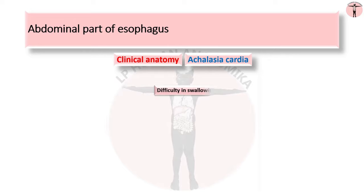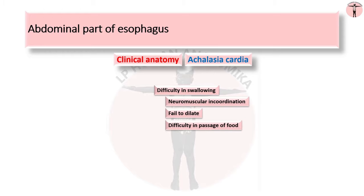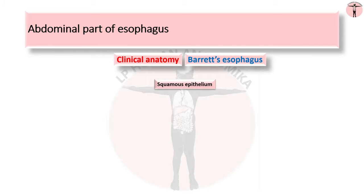Achalasia cardia is difficulty in swallowing. Usually the lower end of the esophagus is closed and dilates only during the passage of food. However, due to neuromuscular incoordination, it may fail to dilate, leading to difficulty in passage of food — dysphagia — and accumulation of food with marked dilatation of the esophagus. In certain clinical conditions, the squamous epithelium of the lower esophagus may be replaced by columnar epithelium; this condition is called Barrett's esophagus.